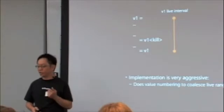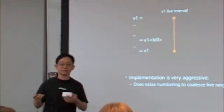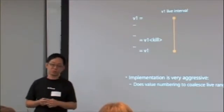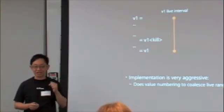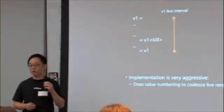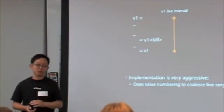It's worth noting the implementation of the register coalescer is very, very aggressive. We do value numbering, which means we can coalesce a lot of overlapping live intervals together. After register coalescing, you see a lot of live intervals that have multiple definitions, and they're represented by different value numbers.